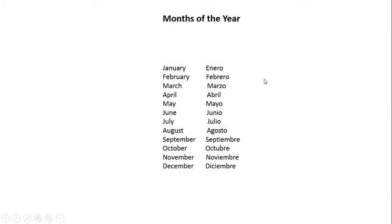At this point, we're getting close to the end of this module. I want to add a little bit more to your vocabulary — these are the months of the year. Repeat after me: January is enero, February is febrero, March is marzo, April is abril, May is mayo, June is junio, July is julio, August is agosto, September is septiembre, October is octubre, November is noviembre, December is diciembre.